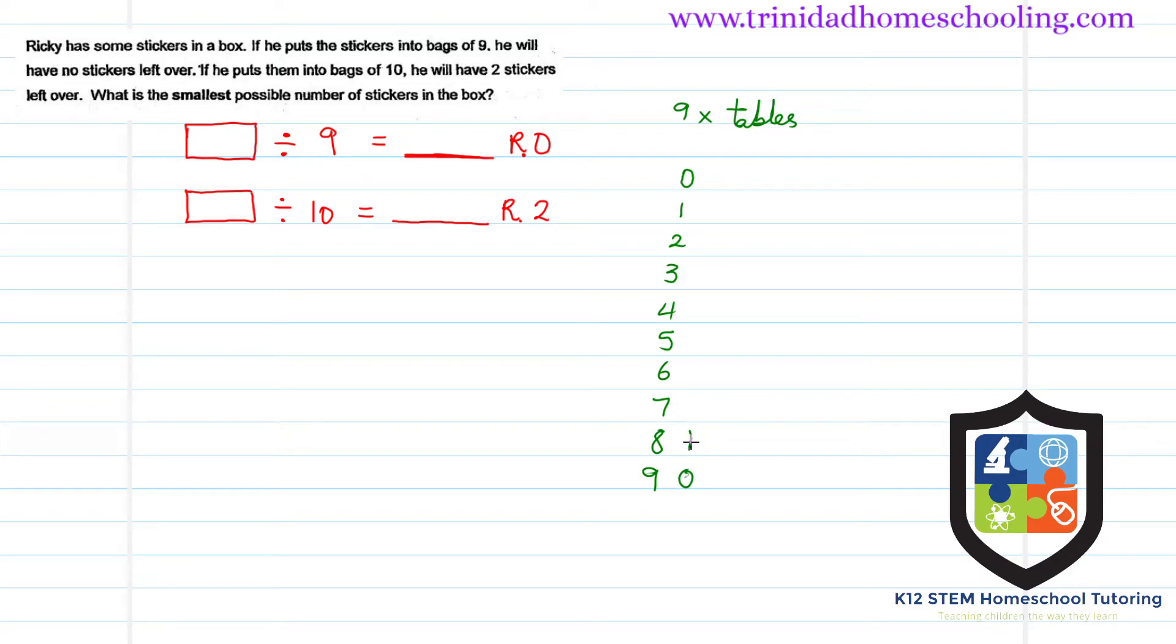Zero, one, two, three, four, five, six, seven, eight, nine. So we know one nine is nine, two nines are eighteen, and so on.